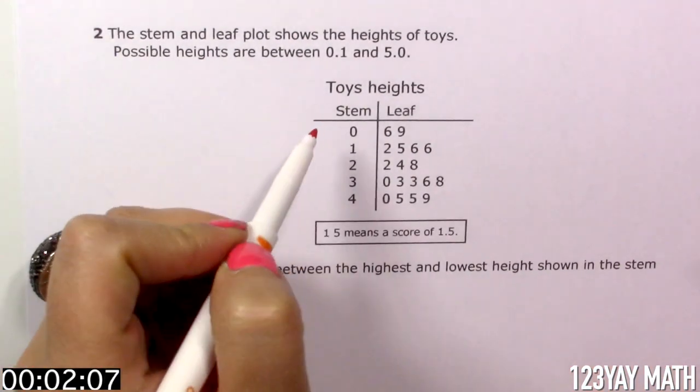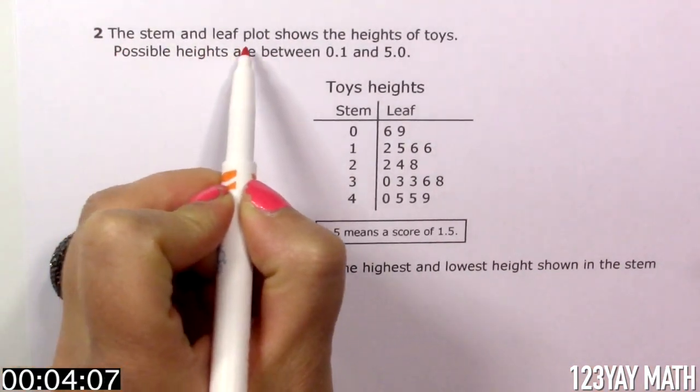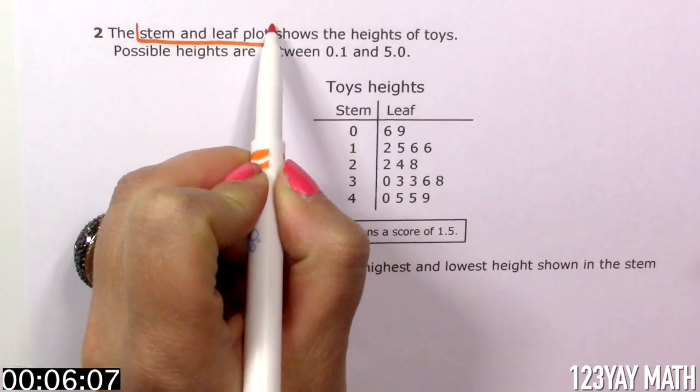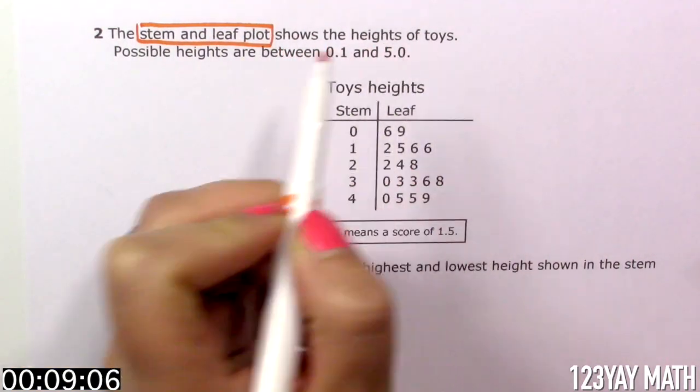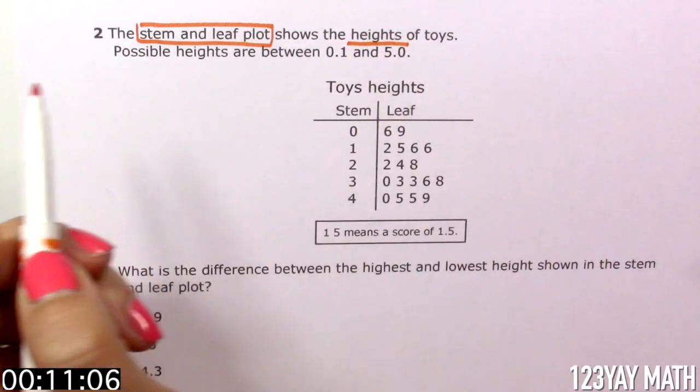Let's read this together and find the keywords. The stem and leaf plot, big keyword, shows the height of toys. The height of toys.